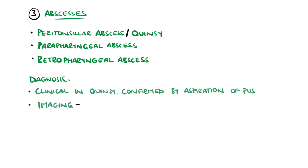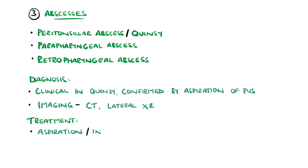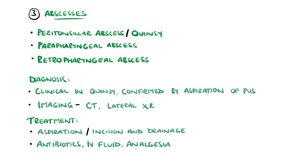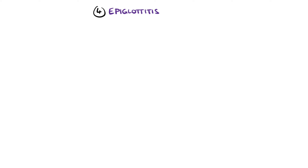Peritonsillar abscesses are mostly clinically diagnosed and confirmed by aspirating pus, while the other two usually require CT scans, and a lateral X-ray may also be done in retropharyngeal abscesses. Treatment is usually with aspiration or incision and drainage, often alongside antibiotics. Intravenous fluids are commonly given as most of these patients will be dehydrated, as well as analgesia, and some smaller abscesses may only need intravenous antibiotics.